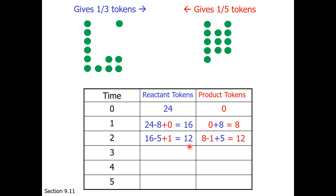Many students think this is equilibrium because we have equal tokens on each side — but that's not our definition. Our definition is that the forward rate equals the reverse rate. Our forward rate is 5 tokens and our reverse rate is 1 token, so we're not at equilibrium yet. One third times 12 would be 4 tokens forward, and one fifth times 12 would be 2 tokens reverse.